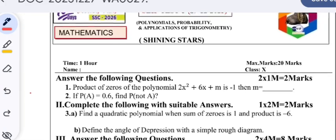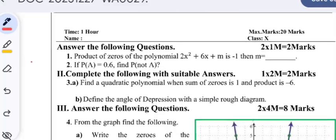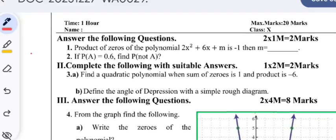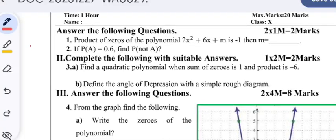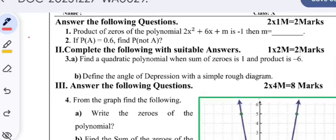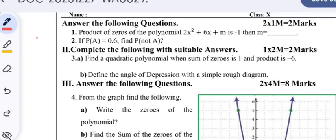Now the questions are: Product of zeros of the polynomial 2x² + 6x + m is -1, then m is equal to what?